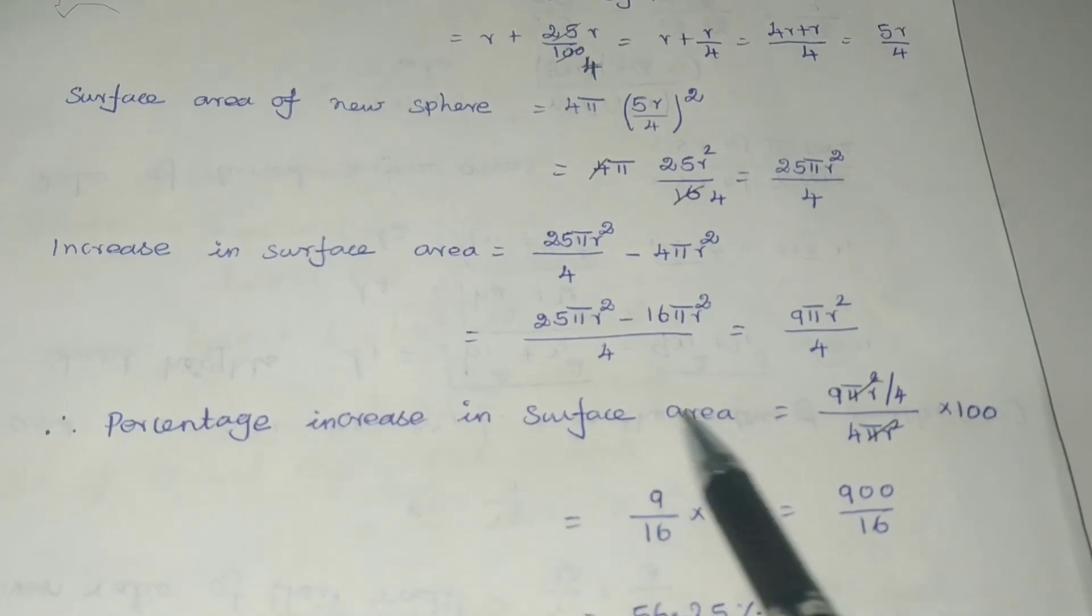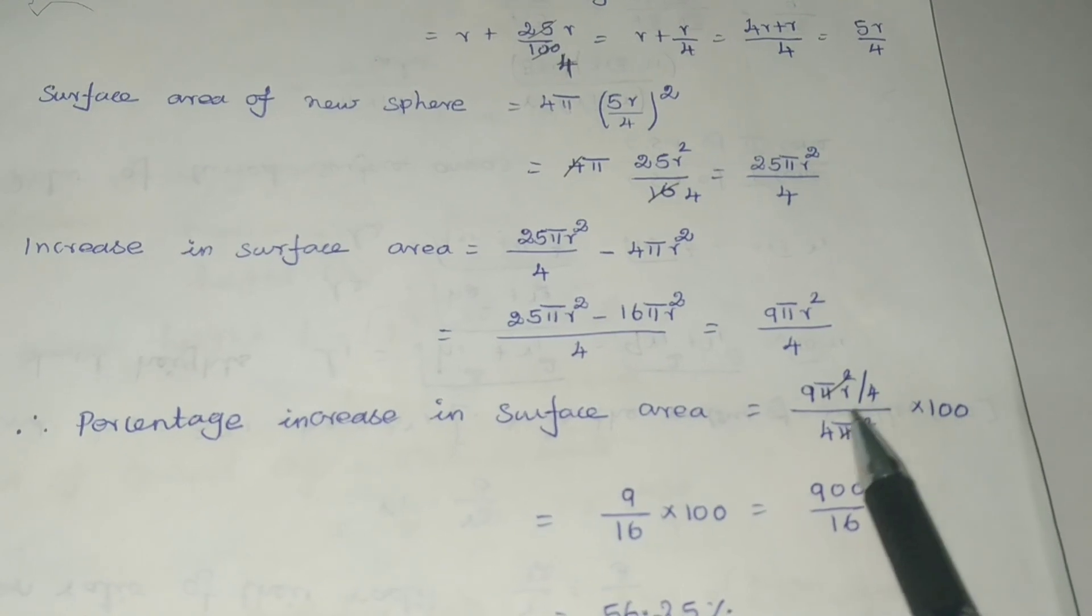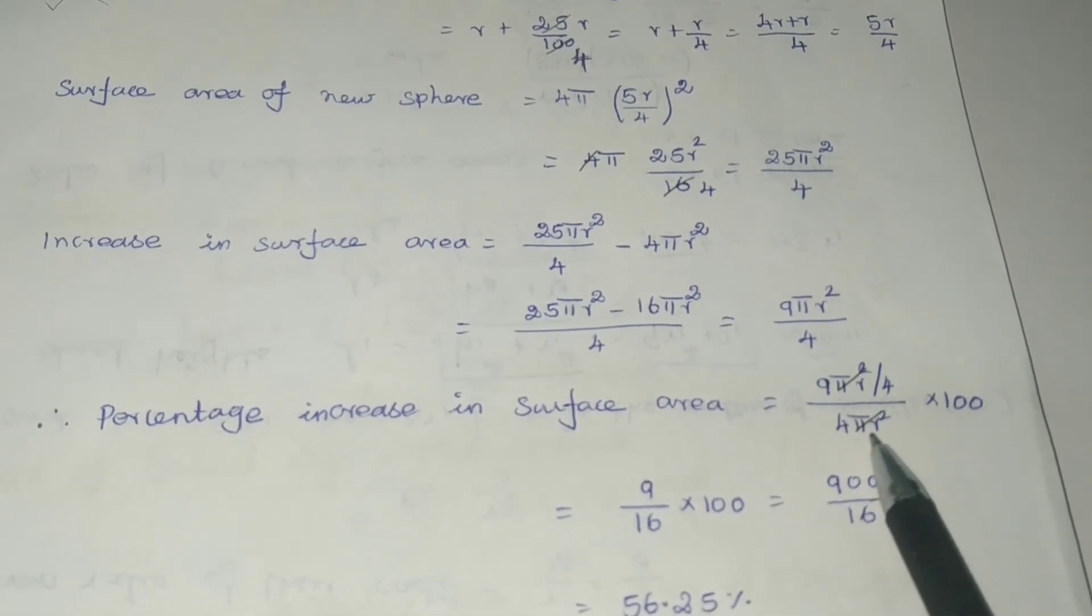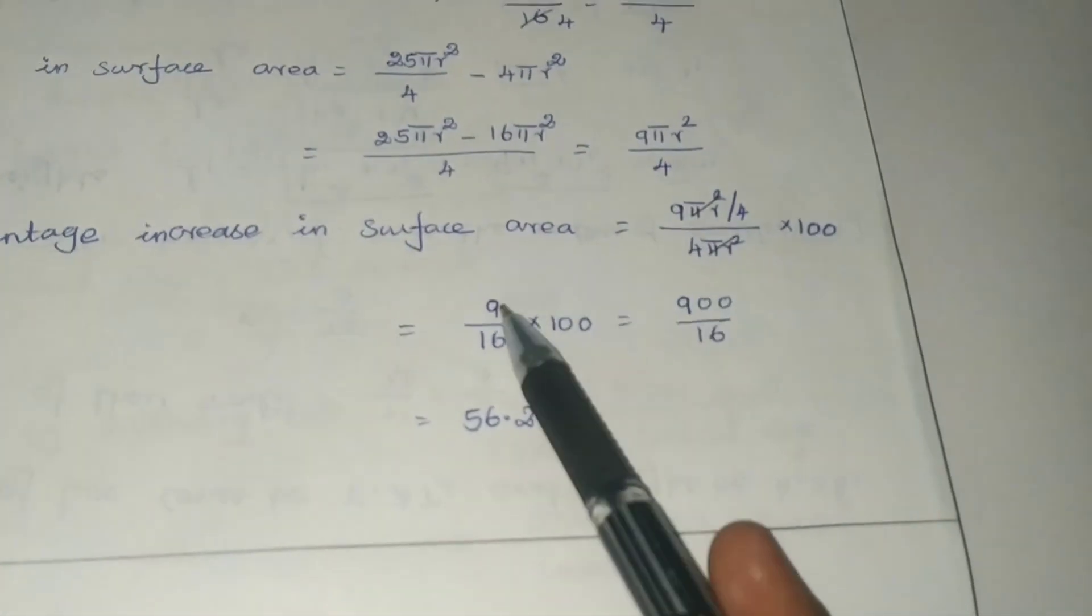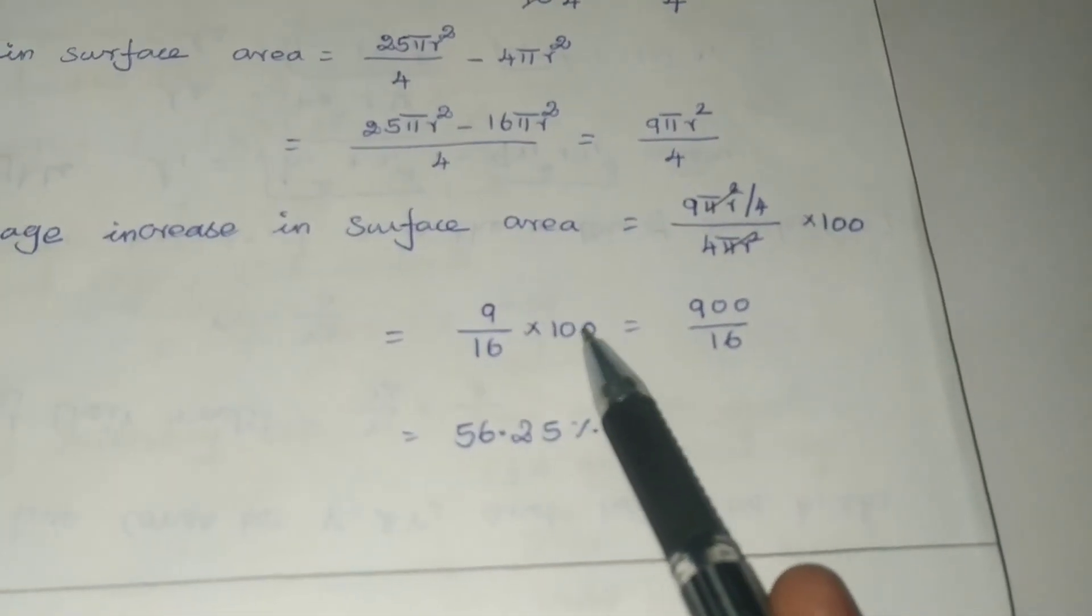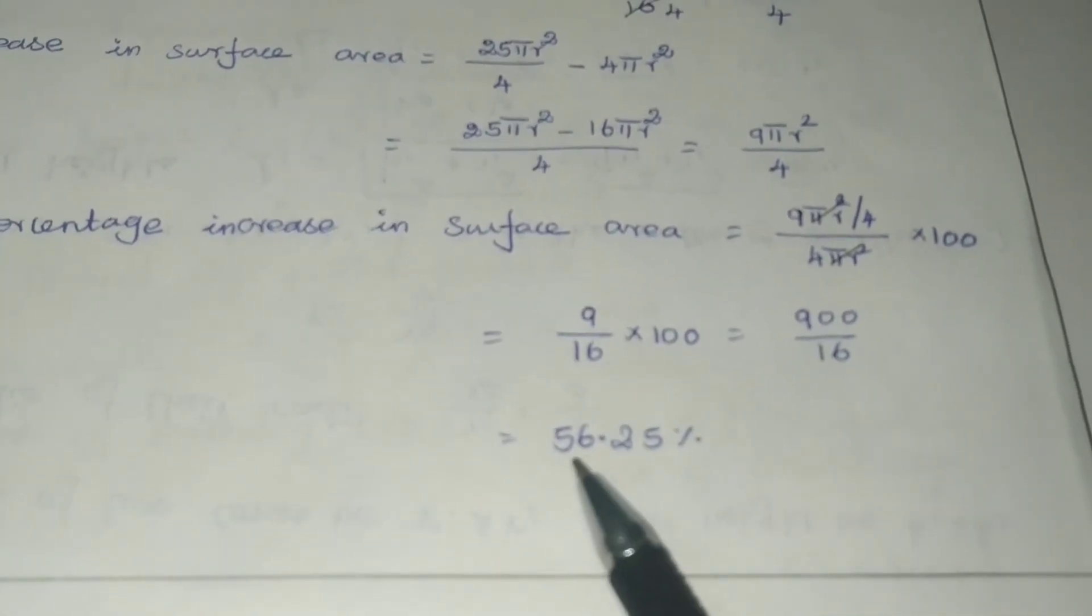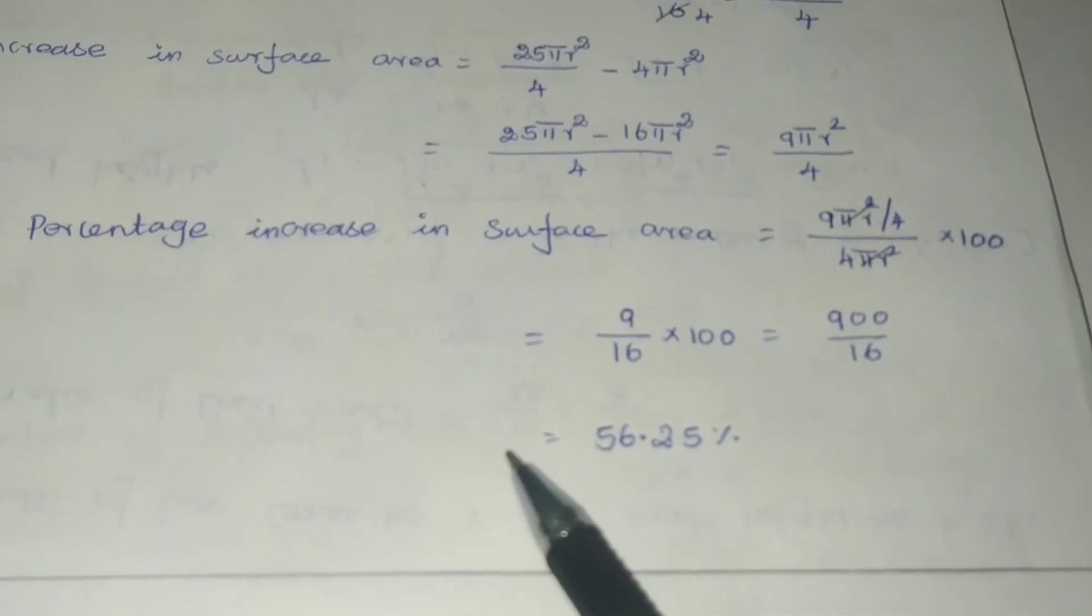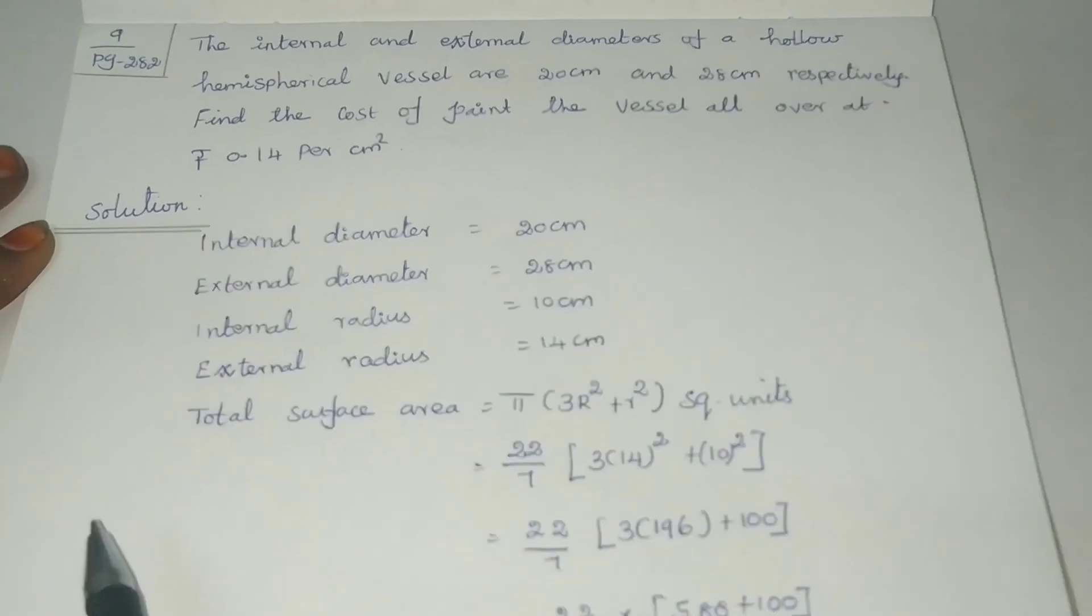Therefore, percentage increase in surface area equals 9πR² divided by 4 divided by 4πR². πR² cancels, leaving 9/16 × 100, which equals 900/16, simplified to 56.25%. Therefore, percentage increase in the surface area is 56.25%.